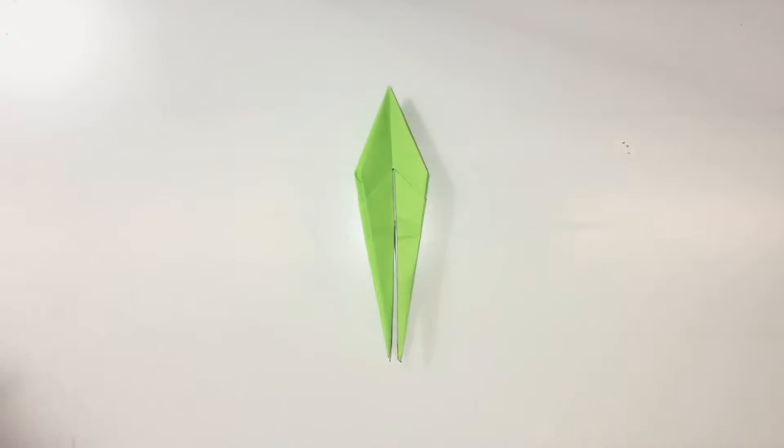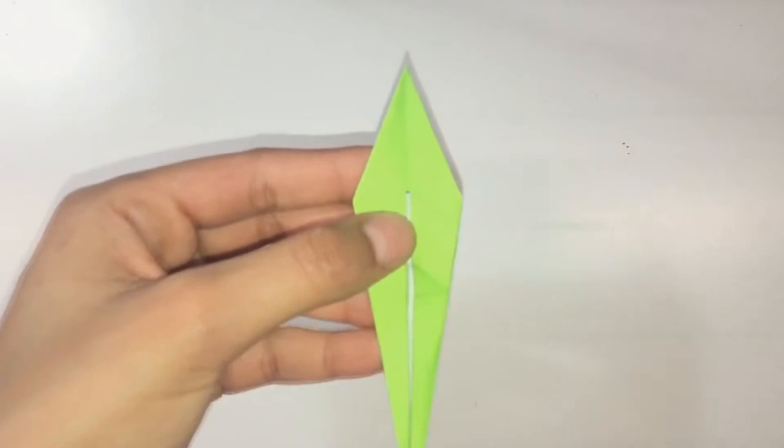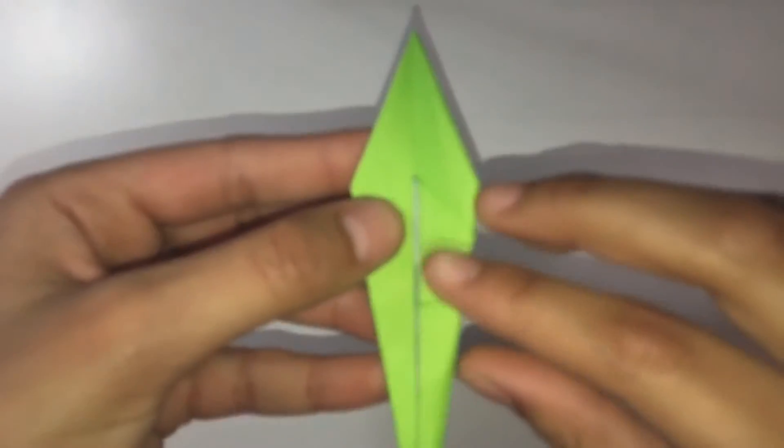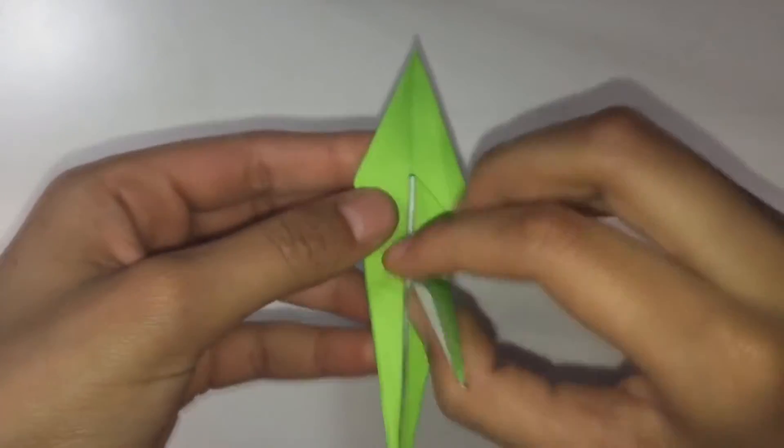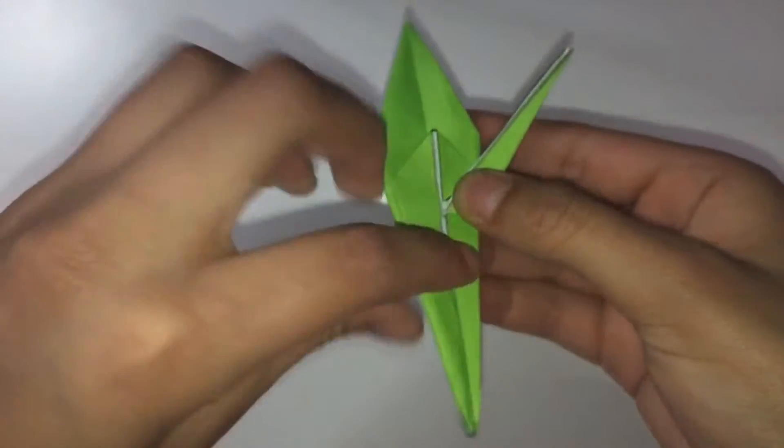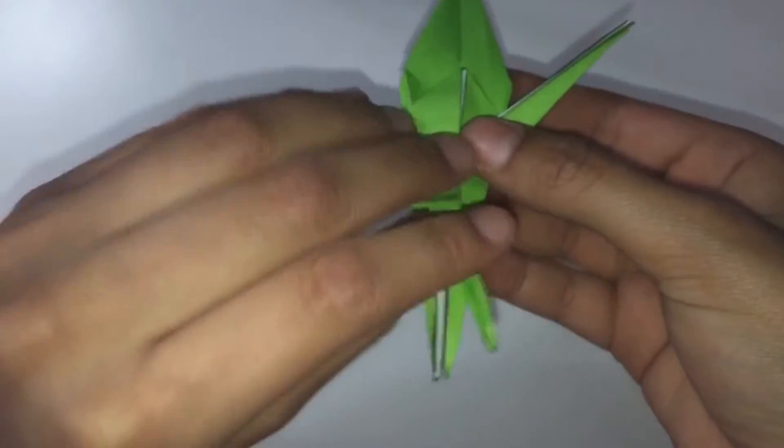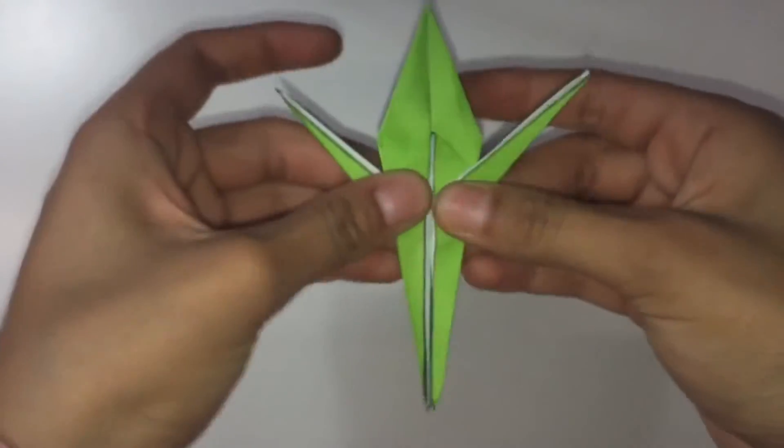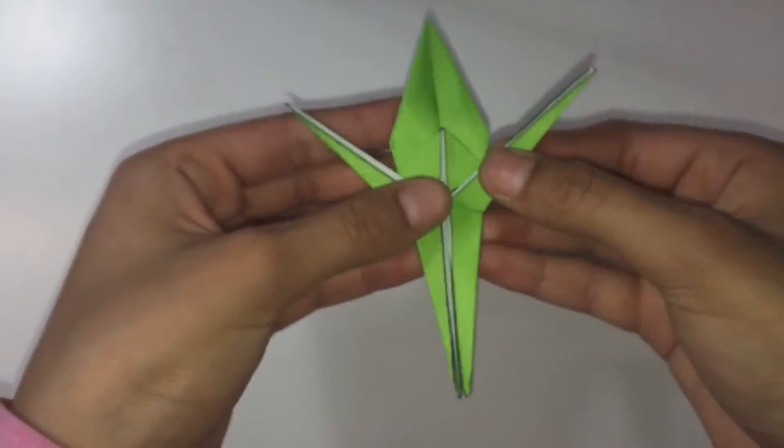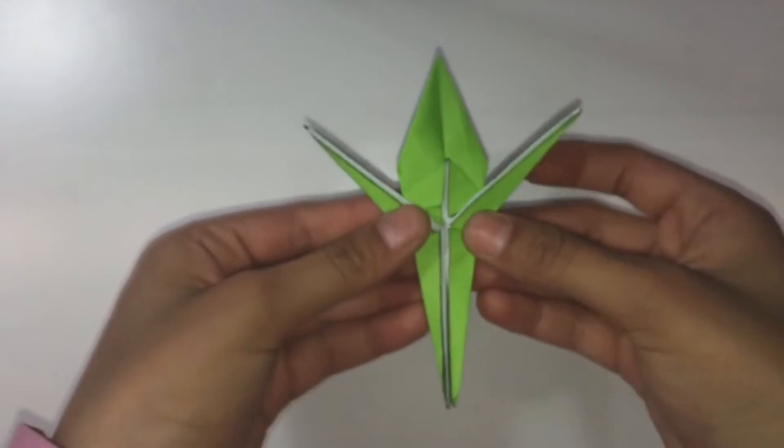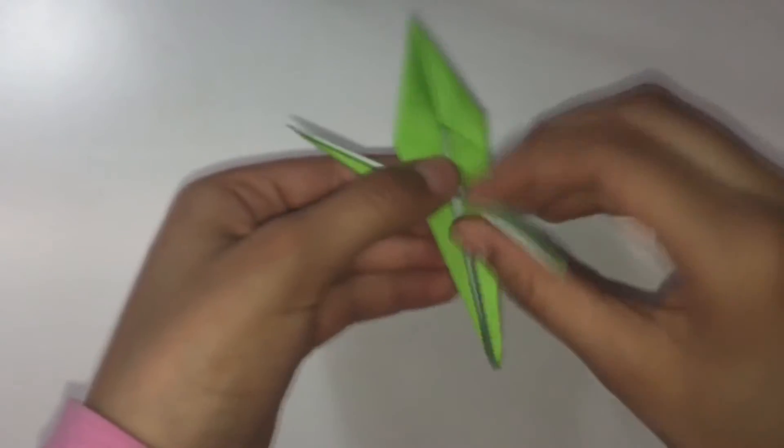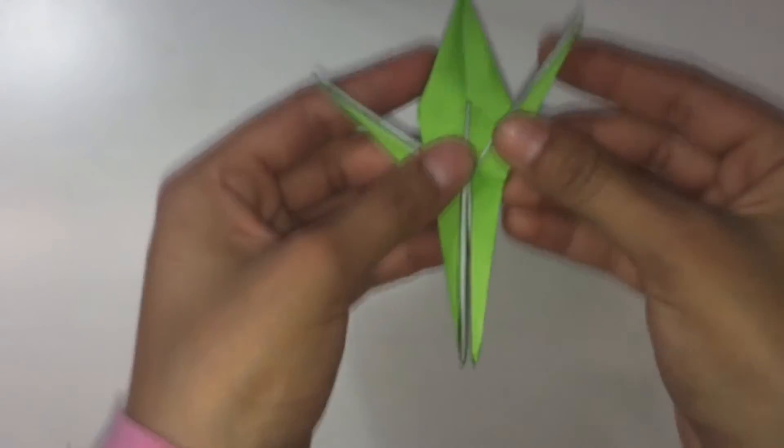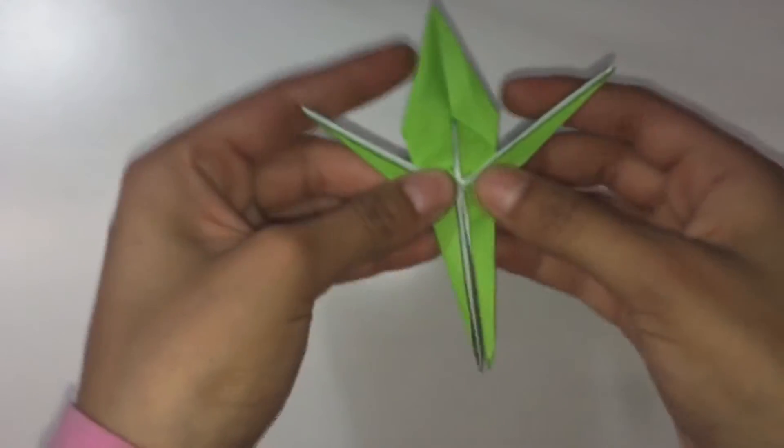Next we will create the legs. So just fold them diagonally up at the top. We will later turn these into inside reverse folds. You can make them wider out, more in, or just like this.